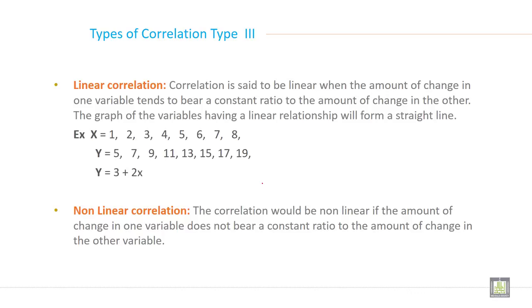What is linear correlation? Correlation is said to be linear when amount of change in one variable tends to bear a constant ratio to the amount of change in others. The graph of the variable having a linear relationship will be a straight line like this.